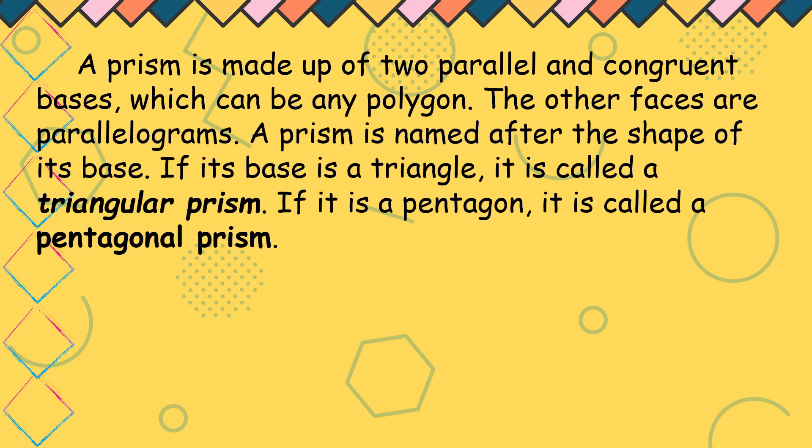Let us identify the different kinds of prism and pyramid. A prism is made of two parallel and congruent bases, which can be any polygon. The other faces are parallelograms. A prism is named after the shape of its base. Kung ano yung base o yung pinaka nasa ilalim niya. If the base is a triangle, it is called triangular prism. If it is a pentagon, it is called a pentagonal prism.